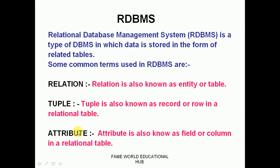Now, attributes: I'm talking about column headings — Student ID, Student Name, Student Address, etc. In the student table, the columns in which data is stored vertically — we call these columns attributes. An attribute is also known as a field and a column in the relational table. To summarize: in RDBMS, the table we call an entity or relation; rows are horizontal and we call them records or tuples; columns are vertical and we call them attributes or fields.